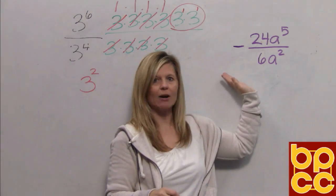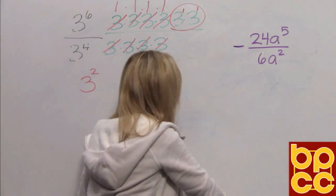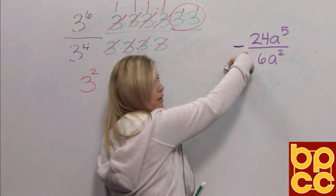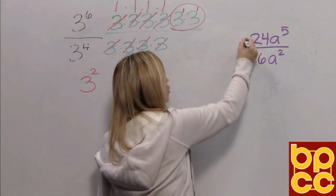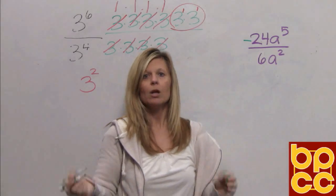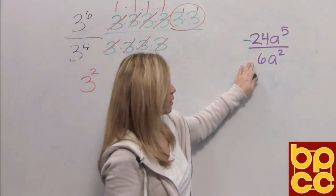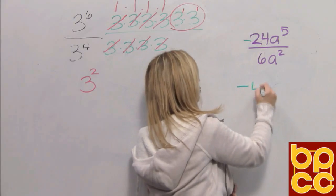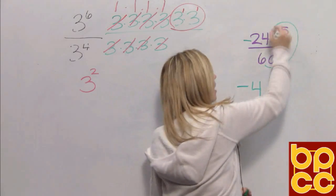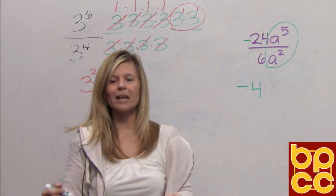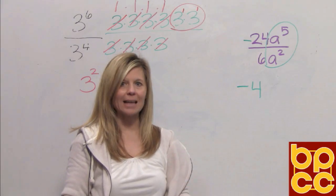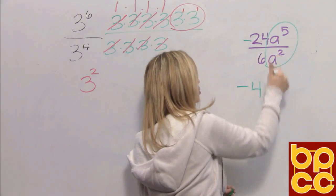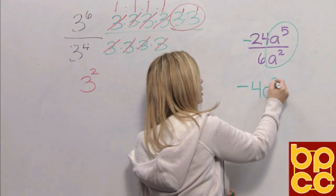Now if we go over to this algebra expression, first thing: we talked about this negative — if it's in the middle of the fraction bar, it floats to the numerator. We divide our coefficients first. Negative 24 divided by 6 would be negative 4. Now we're going to divide our variables. They're both the letter A, so the rule is when you divide letters, you subtract exponents. 5 take away 2 would leave us with A cubed.